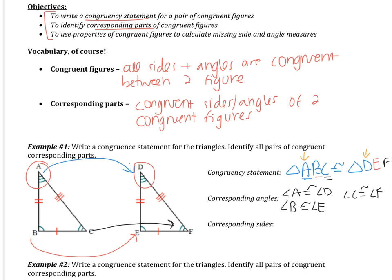For corresponding sides, it works the same way. From the figure: AB (two tick marks) is congruent to DE (two tick marks); BC (one tick mark) is congruent to EF (one tick mark); and AC is congruent to DF (three tick marks). You can also read this from your congruency statement — AB corresponds to DE, the first two letters of each triangle. In total, we have three pairs of corresponding sides, three pairs of corresponding angles, and we've written our congruency statement.